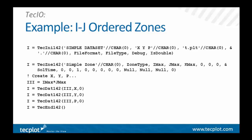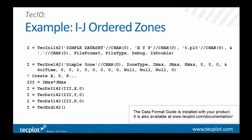The file type can be full, which includes all your data, or you can use separate grid and solution files. Debug is another integer parameter that gives you diagnostic output if you want, and IS_DOUBLE is either 1 or 0. The next call is TechZNE, where we pass the zone title and zone type — in this case ORDERED — and the dimensions of the zone. The solution time and the three zeros after IMAX, JMAX, and KMAX are ignored, but the remaining zeros and ones relate to advanced features like variable sharing. You can look at the documentation to see what all the options are.